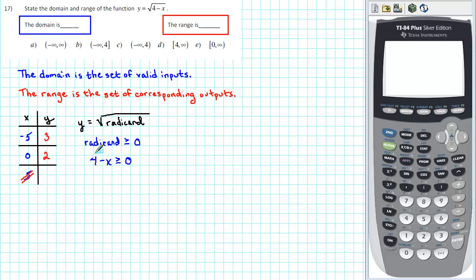That gives us 4 minus x is greater than or equal to 0. To solve this inequality, we can add x to both sides. We get 4 is greater than or equal to x, or equivalently, x is less than or equal to 4.